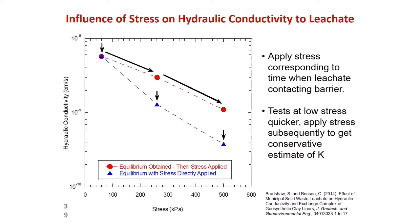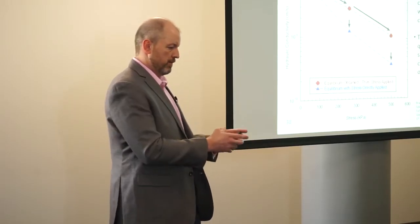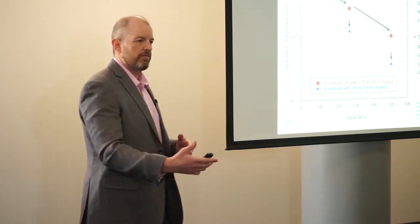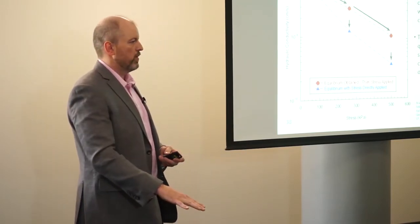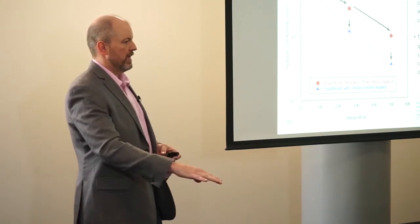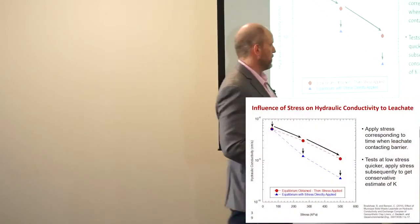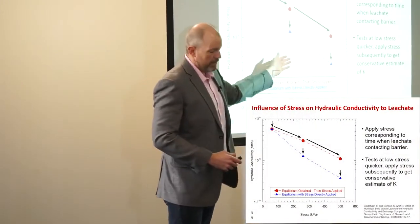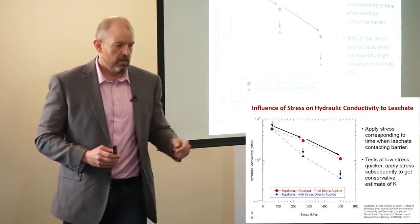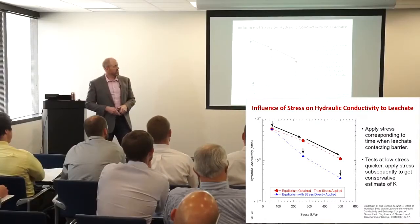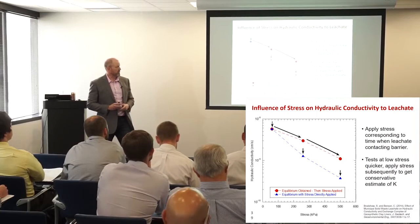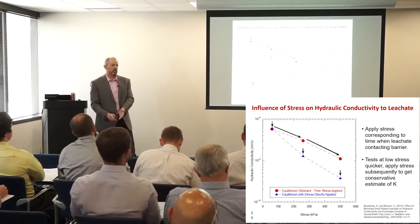Here we're looking at two different data series, and they're both heading towards the same state. If we expose the GCL to the leachate, allow it to come to equilibrium — a stable situation — and then we increase the effective stress, we're going to drop the permeability, let it come to equilibrium again, increase the effective stress, lower permeability. Or if we run an individual series of tests starting with the same stresses directly applied to the specimen, we're always heading down in permeability.